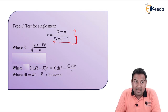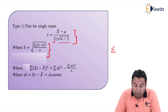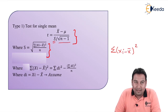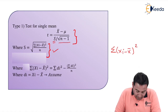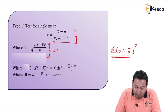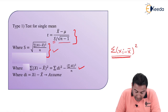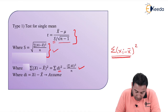Here, S can be calculated using this formula, where this term is sum of squares of deviation from the mean. This formula will give you the value of S. And if the sum of squares of deviation from the mean is not mentioned, it can be calculated by another formula. In that formula, you will need DI. And if DI is not mentioned, you can calculate it using this particular formula.